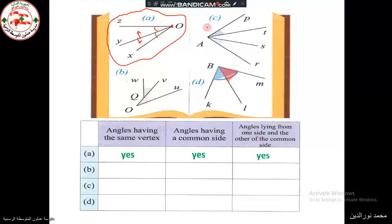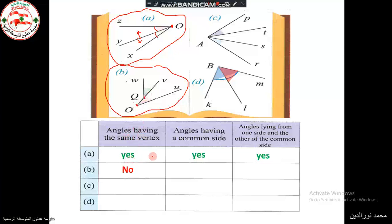For branch B, the vertex of the red angle is O and the vertex of the blue angle is Q, so no, they do not have the same vertex. Do the angles have a common side? Yes, they have a common side, so we put yes. Do the angles lie at either parts of the common side? Yes.